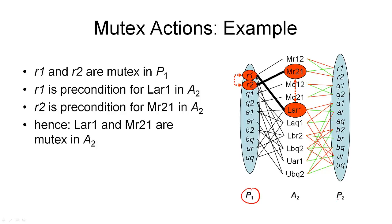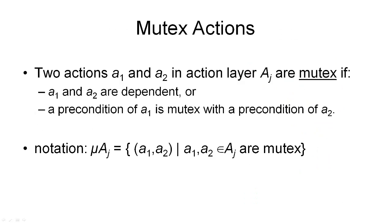What we've seen is that mutual exclusivity between actions can lead to mutual exclusivity between propositions in the following proposition layer. And the other way around, mutual exclusivity between propositions can lead to mutual exclusivity in the following action layer. We can now formally define what it means for two actions in the same action layer to be mutually exclusive.